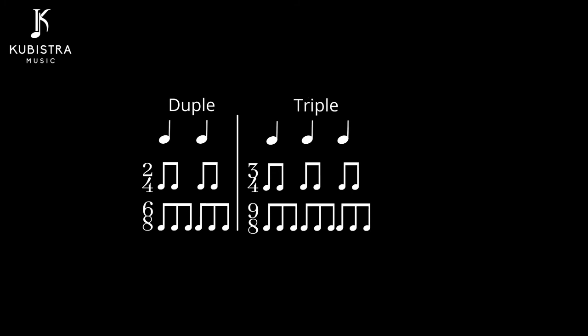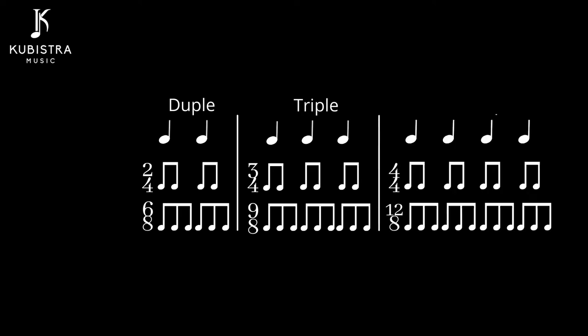In textbooks, 2/4 and 6/8 are categorized as duple meter because they are based on two beats per measure. 3/4 and 9/8 are categorized as triple meter because they are based on three beats per measure. The most common 4/4 is categorized as quadruple meter alongside 12/8 because it's based on four beats per measure. Because of the nature of how they are subdivided, 2/4, 3/4, and 4/4 are also categorized as simple meter, while 6/8, 9/8, and 12/8 are categorized as compound meter.